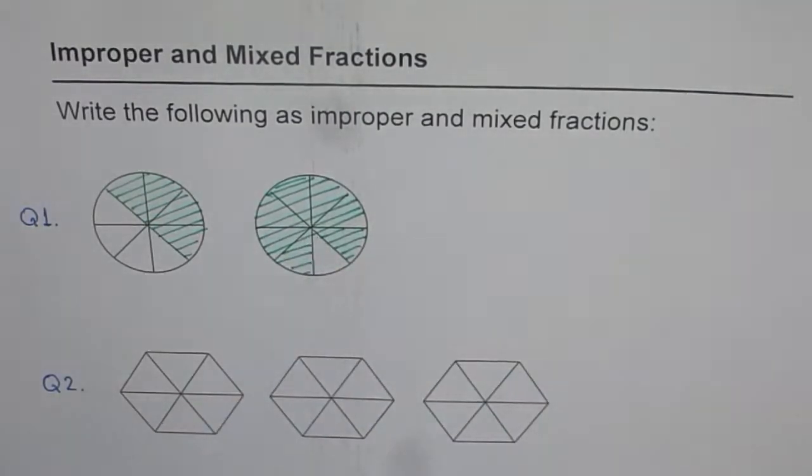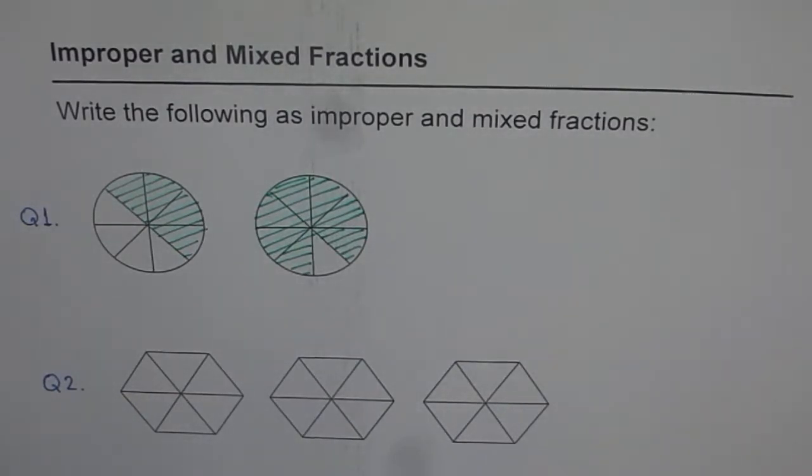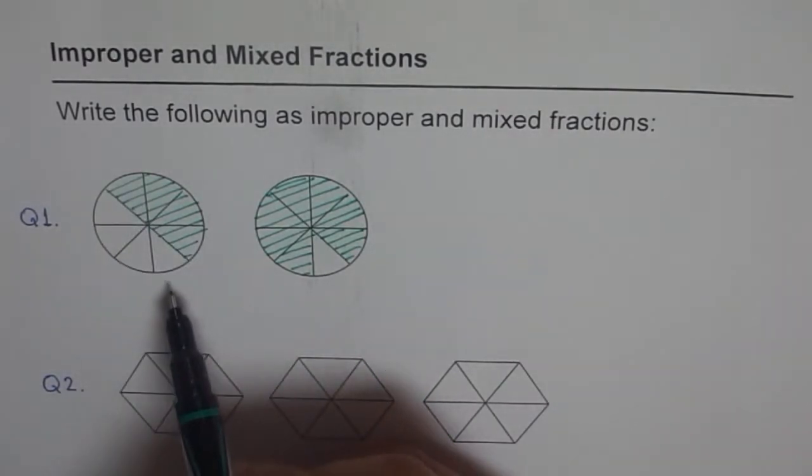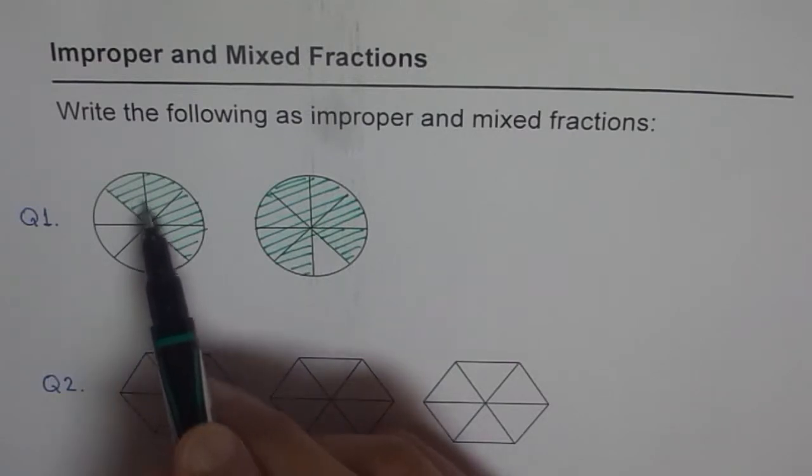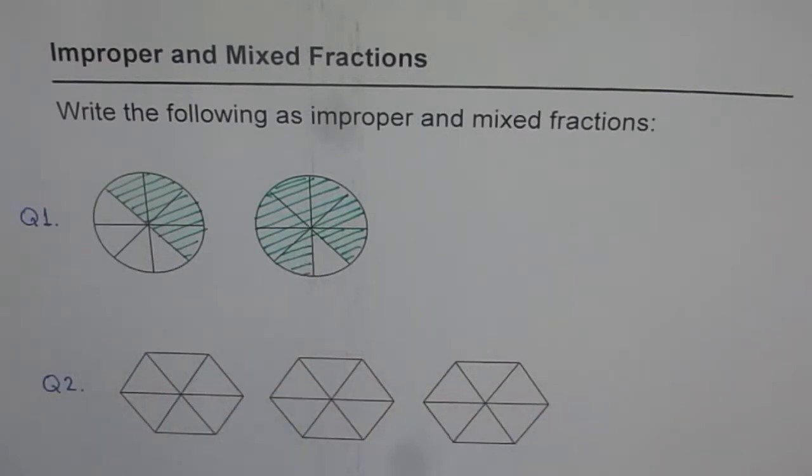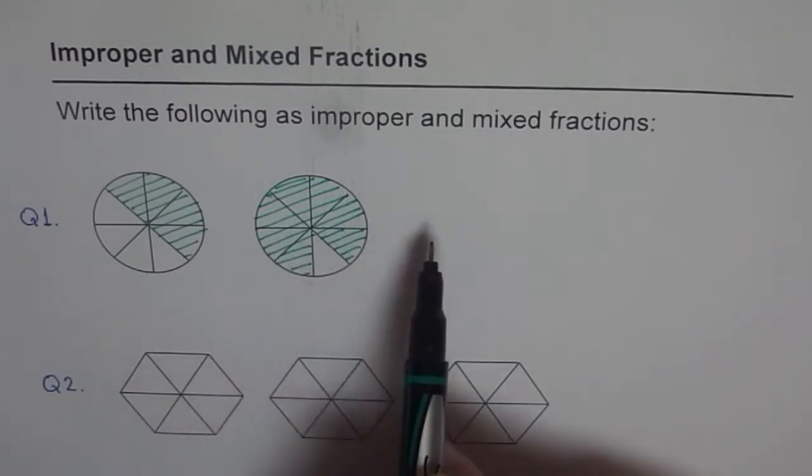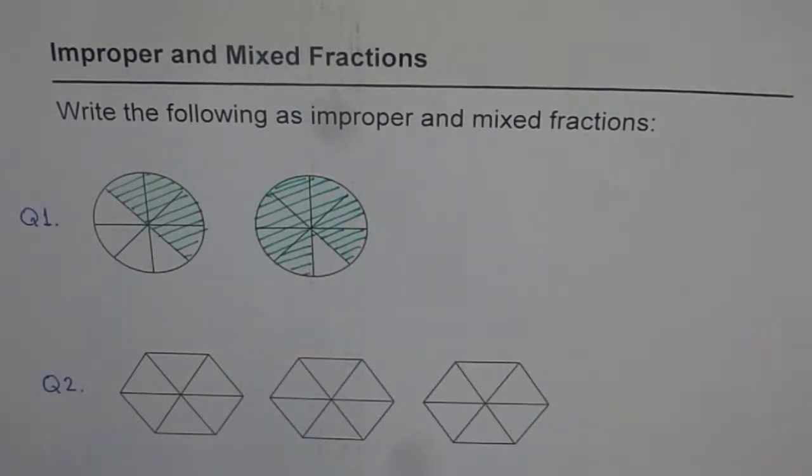Think that this green is not there, so neglect it. So basically what I've done here is that we have a circle which is divided into 8 equal parts. So I've shaded 4 here and 7 here. So you have to write them as improper fractions and as mixed fractions. That is your first question.